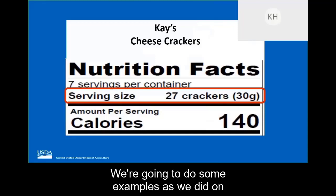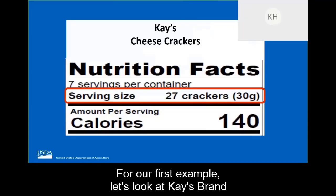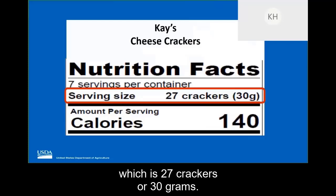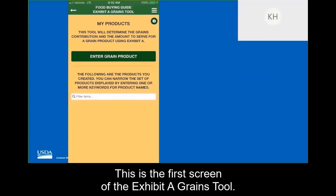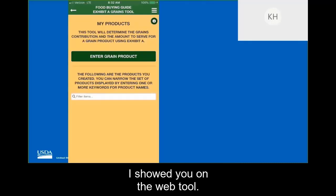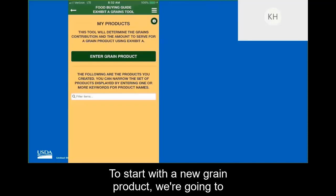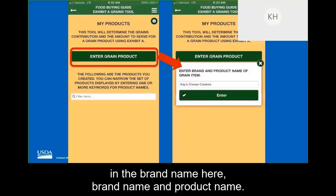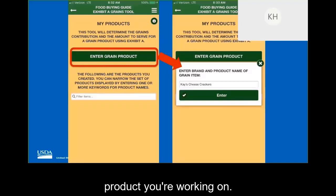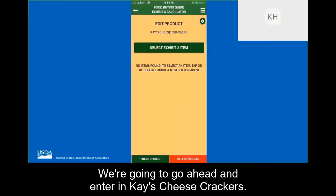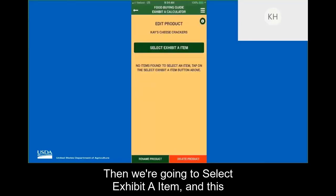Let's look at the Exhibit A Grains tool on the mobile app. To navigate to the tool, you can click on the More tile and select Exhibit A Grains Tool from the menu option. Another way is to click on the navigation menu — sometimes referred to as a hamburger menu — at the top right-hand corner, and select Exhibit A Grains Tool from there. We'll do some examples as we did on the web tool. For our first example, let's look at case brand cheese crackers. As you can see circled in red, the serving size is 27 crackers or 30 grams. To start with a new grain product, we're going to click on the Enter Grains Product button and enter in the product name to identify which product we're working on.